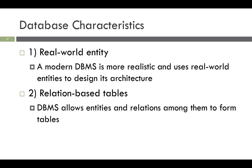Traditionally, data was organized in file formats. A modern DBMS has the following characteristics. It is a real-world entity, meaning that the modern DBMS is more realistic and uses real-world entities to design its architecture. It uses behaviors and attributes too. For example, a school database may use students as an entity and their age as an attribute. It also has relation-based tables, allowing entities and relationships among them to form tables.